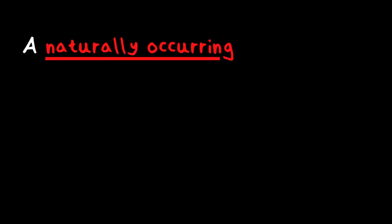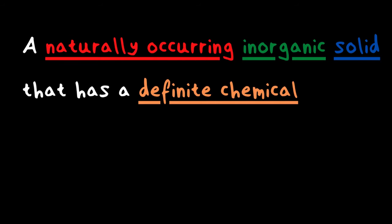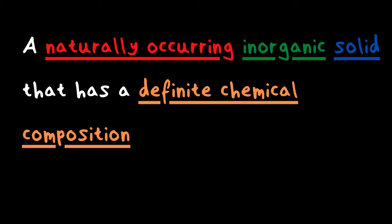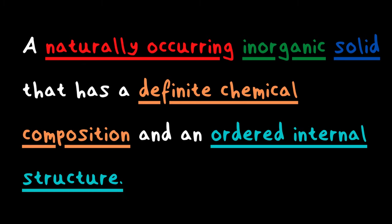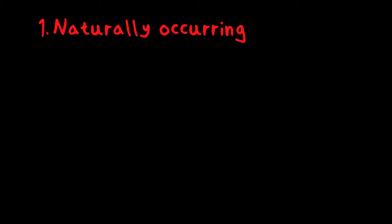Minerals are also present and very important in the foods we eat — for example, zinc, magnesium, and iron. But geologists have a different definition of minerals when it comes to geology. The geologic definition of a mineral is a naturally occurring inorganic solid that has a definite chemical composition and an ordered internal structure. Now let's break that down into the five characteristics.